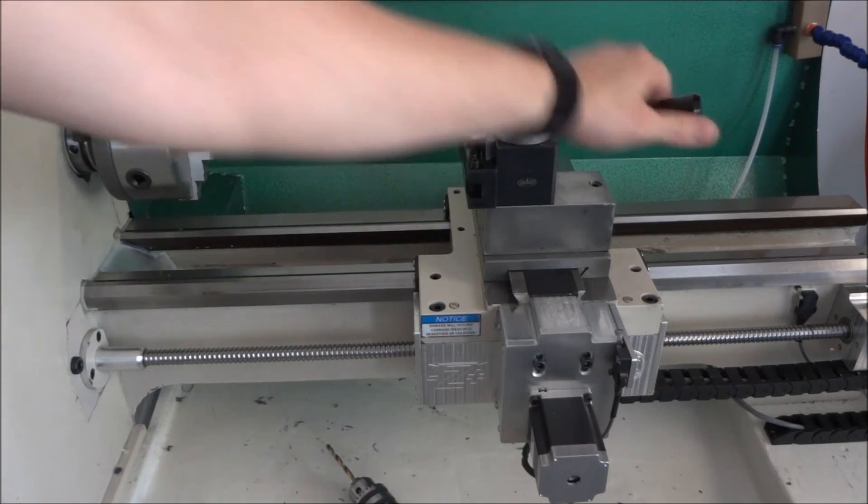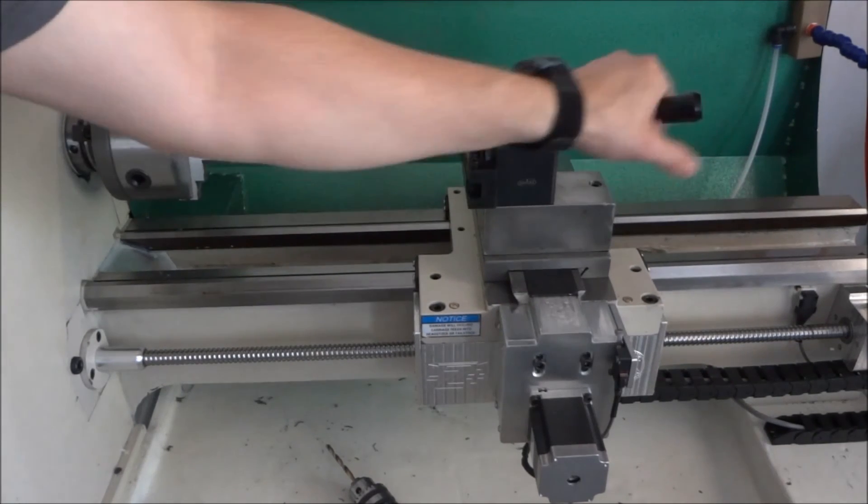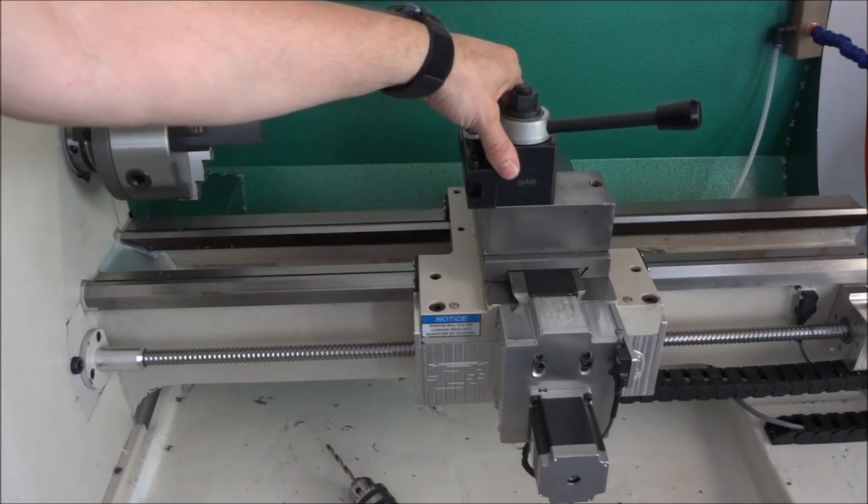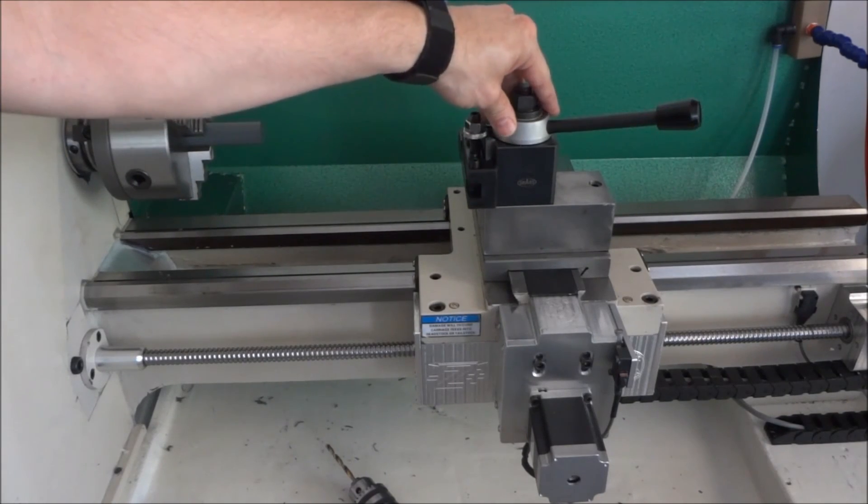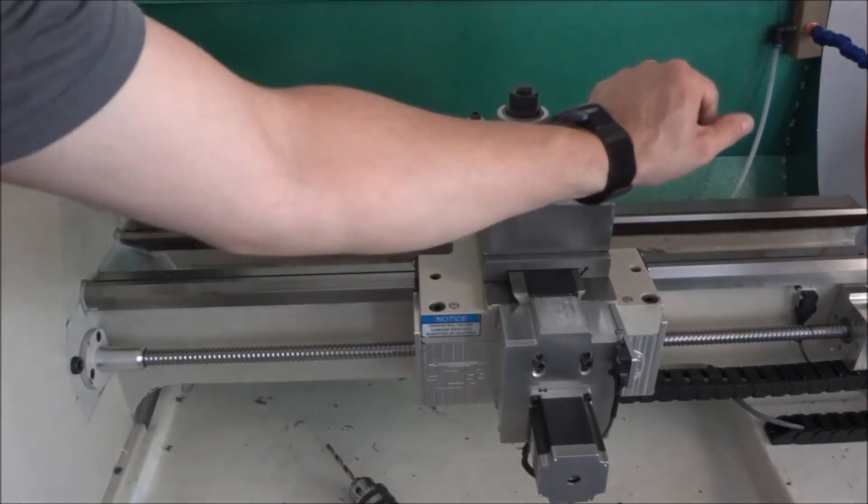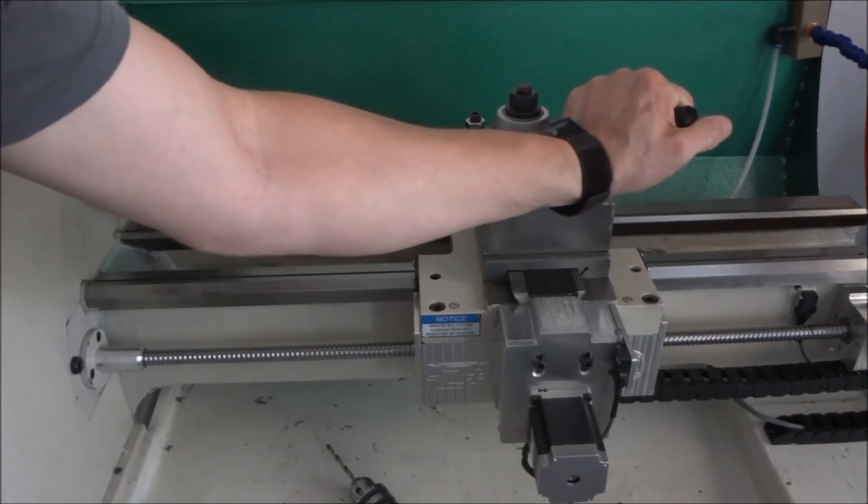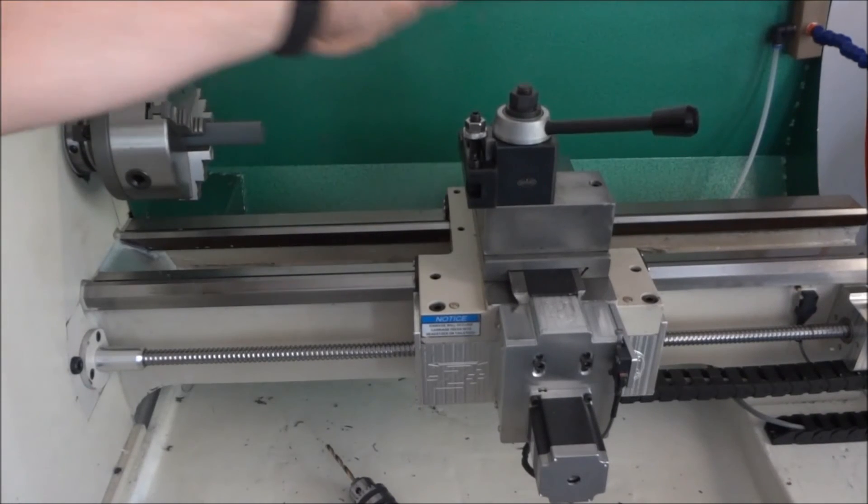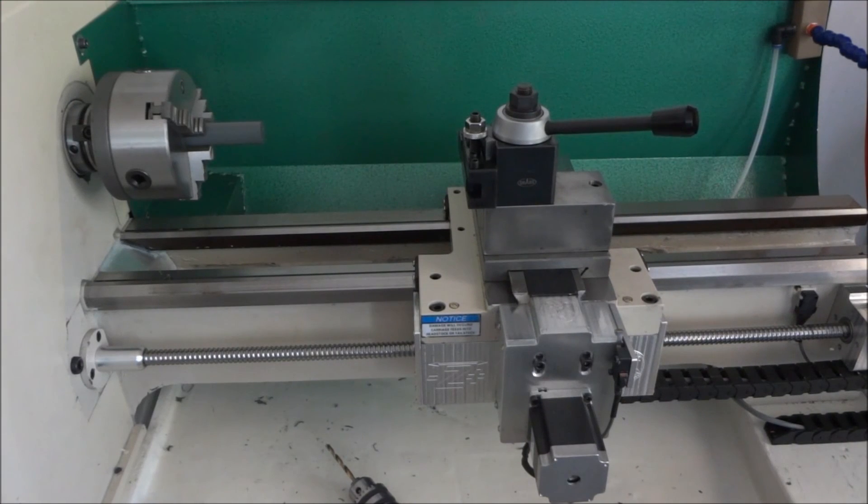But yeah, it turned out really good. It's just the right height. I don't think I could have went with the BXA - I mean, I could have made it work if I would have got a smaller riser, but this is plenty big and sturdy and stable, I think, for the G0602.